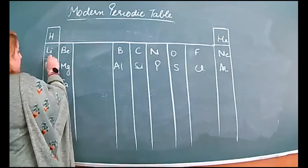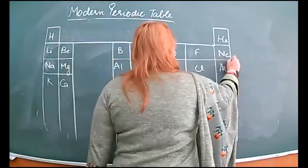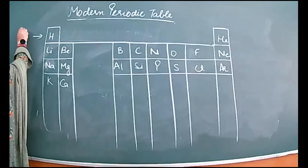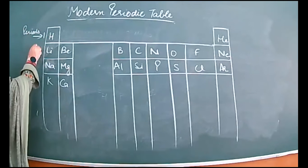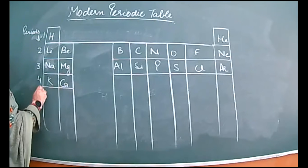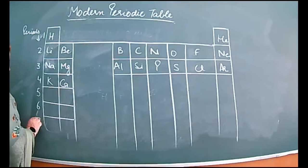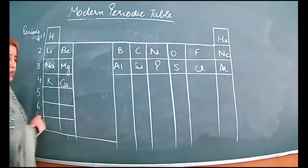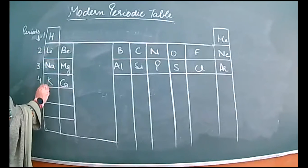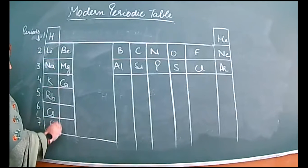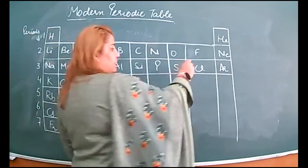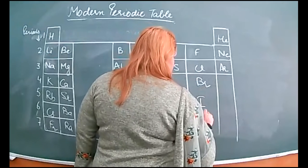These are the first 20 elements that you have to learn. There are 7 periods: 1, 2, 3, 4, 5, 6, 7. The alkali metals include Lithium, Sodium, Potassium, Rubidium, Caesium, and Francium. The halogens include Chlorine, Bromine, Iodine, and Astatine.